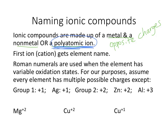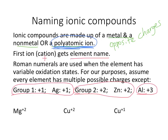To name ionic compounds, the first ion — the cation, which is the positive ion — just gets the element name like it did in covalent. Roman numerals are used when the element has variable oxidation states, meaning varying charges. Assume every element has multiple possible charges except: group 1 and silver are both +1, group 2 and zinc are both +2, and aluminum is +3 — those will not have variable oxidation states. So for example, magnesium (+2) is just magnesium, because magnesium is in group 2, it's always +2, so I don't need a Roman numeral.